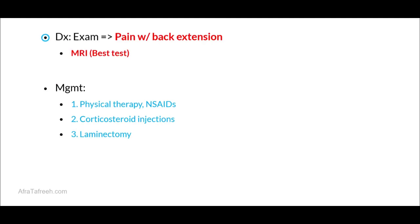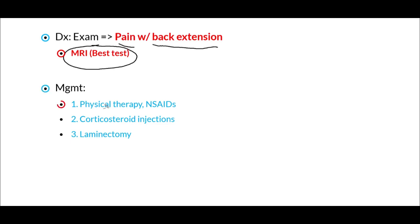On physical exam, patients with spinal stenosis are going to have pain characteristically with back extension. However, our best test in evaluating these patients is going to be MRI. In terms of management, our first step is to provide the patient with physical therapy and NSAIDs. From there, we can progress to corticosteroid injections, and ultimately may need to resort to a laminectomy.